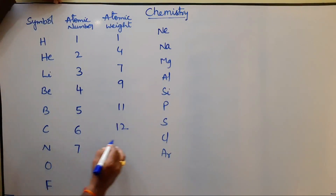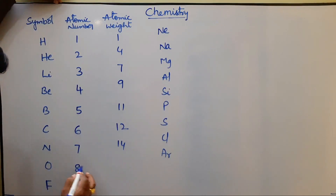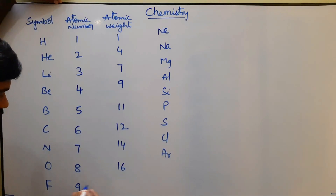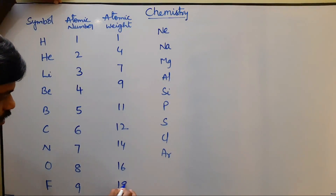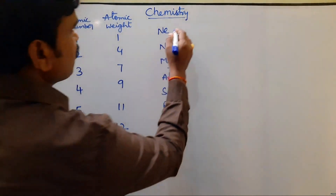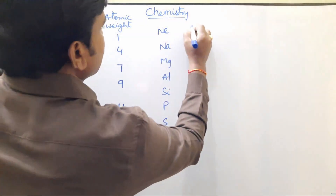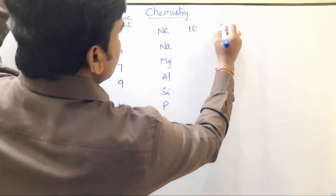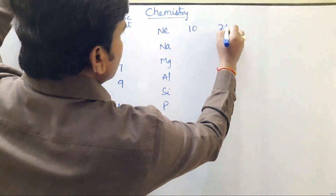Nitrogen atomic number seven, atomic weight fourteen. Oxygen atomic number eight, atomic weight sixteen. Fluorine atomic number is nine and its atomic weight is nineteen. The tenth element is Neon. Neon atomic number is ten and its atomic weight is twenty.